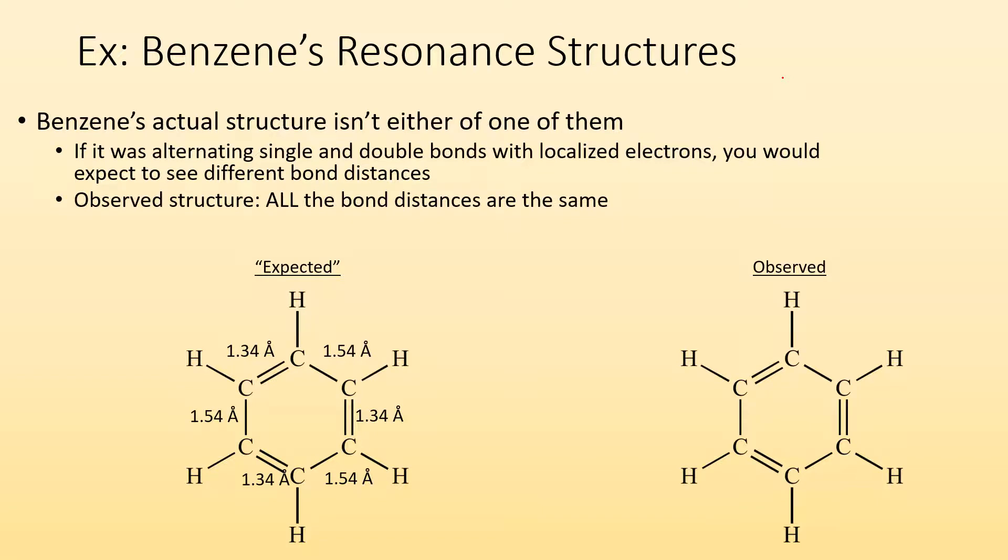But when we actually look at the observed bond distances, turns out on benzene, they're all the same. They're somewhere between a single and a double bond. They're all 1.4 angstroms. Well, how can that be? This is where delocalized electrons come into play, and they can explain why we see the observed bond distances being what they are.